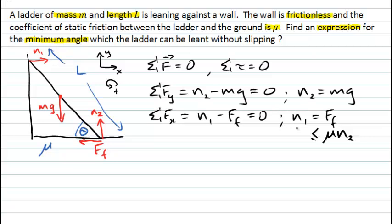So we now have the normal forces there, one of them in terms of the weight, the other one in terms of the static friction force. Neither of those seems to have anything to do with the angle at this point. But the other condition that we need to maintain for static equilibrium is that the sum of all torques must be zero.